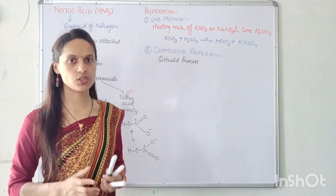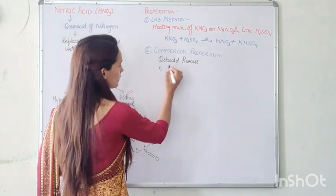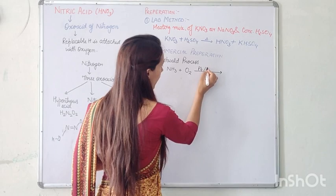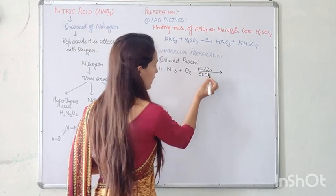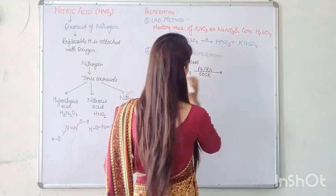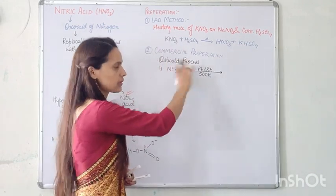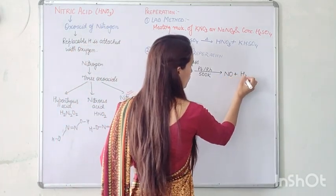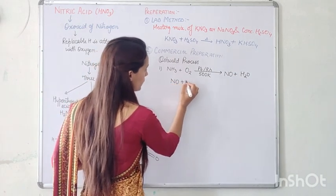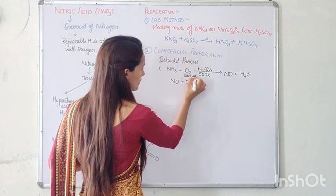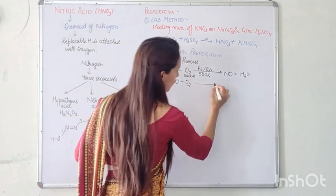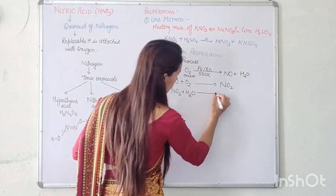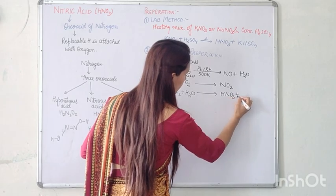In the first step, ammonia reacts with excess of air in the presence of platinum and rhodium at 500 Kelvin to form NO plus H2O. Then this NO reacts again with O2 (since O2 is in excess) to form NO2.